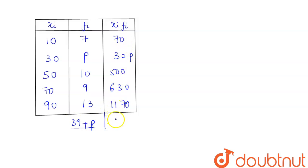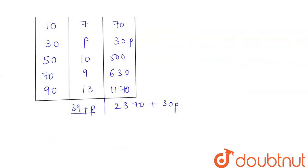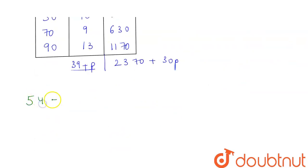In the question we are given the value of our mean to be 54. So if we substitute this value, then we can find the value of p.